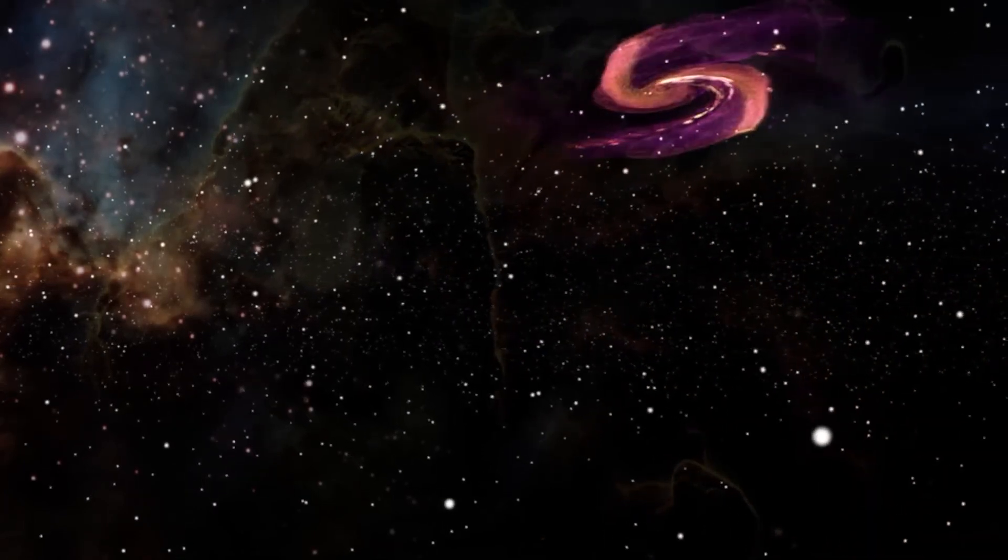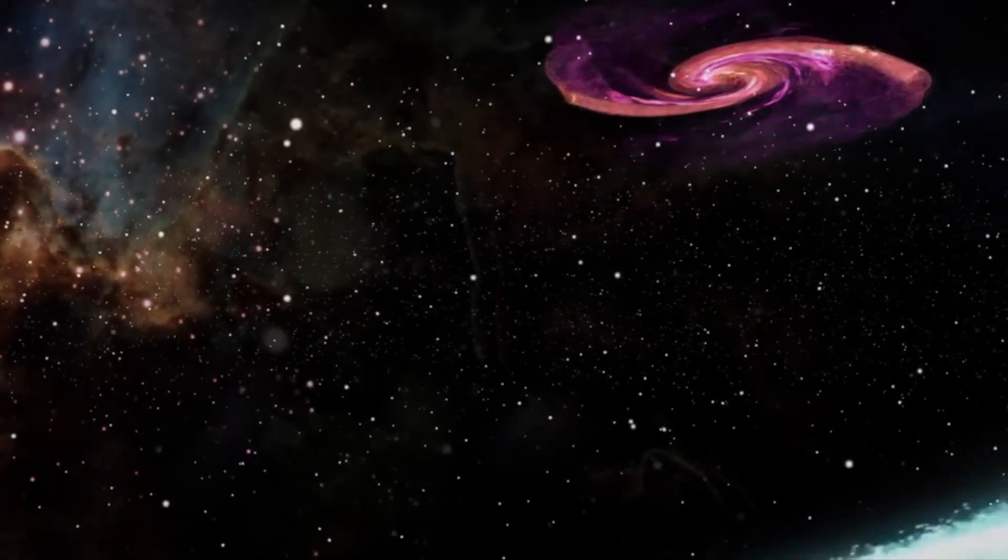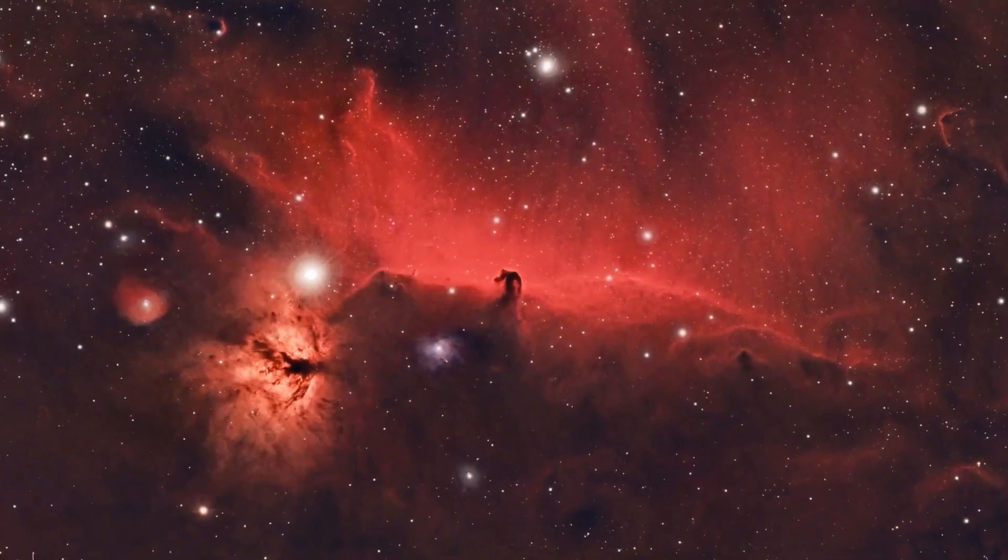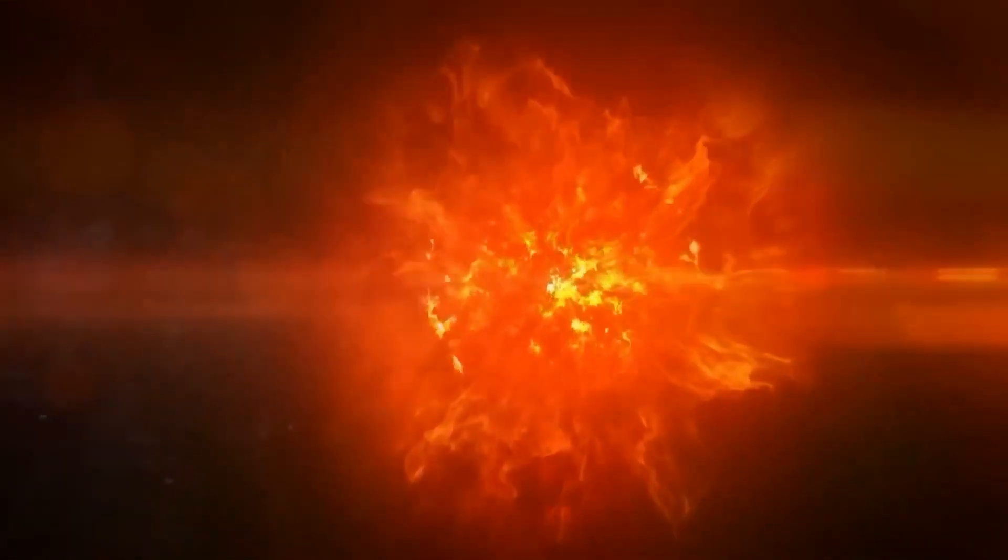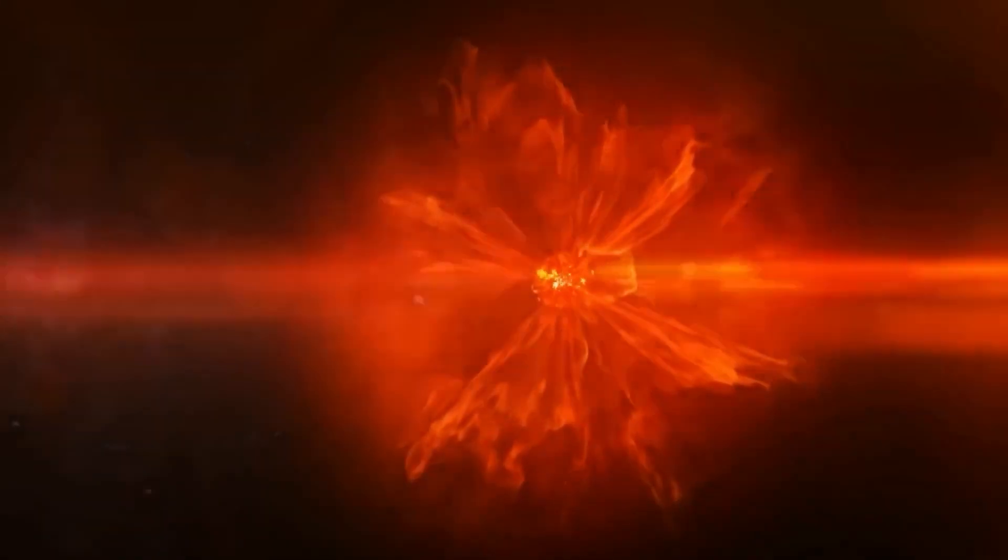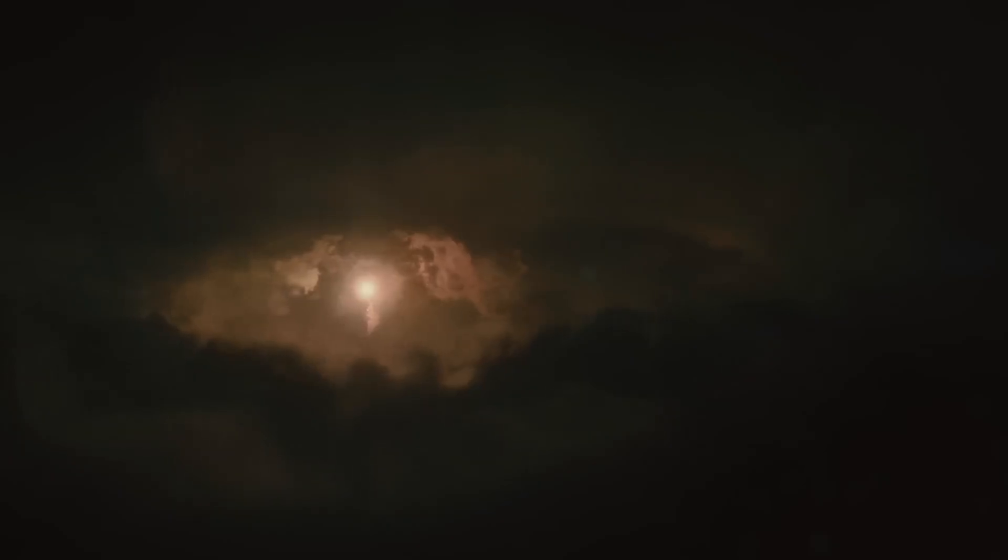When a star, nearing the end of its life, is surrounded by a substantial disk of material, a specific kind of supernova arises. A shockwave is generated after the initial explosion of the supernova and strikes that disk. The shockwave causes the disk to become extremely hot, which in turn leads the disk to generate a large amount of X-ray radiation.